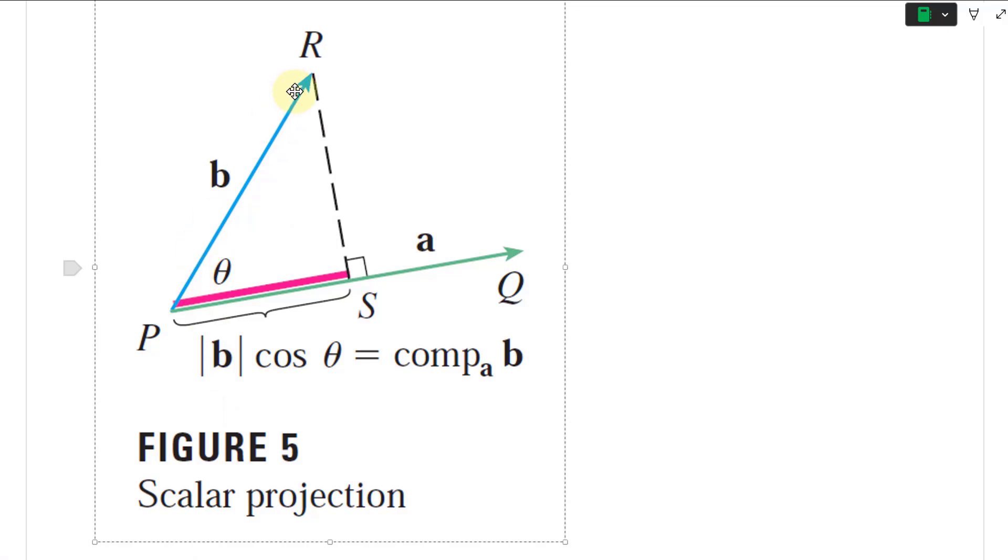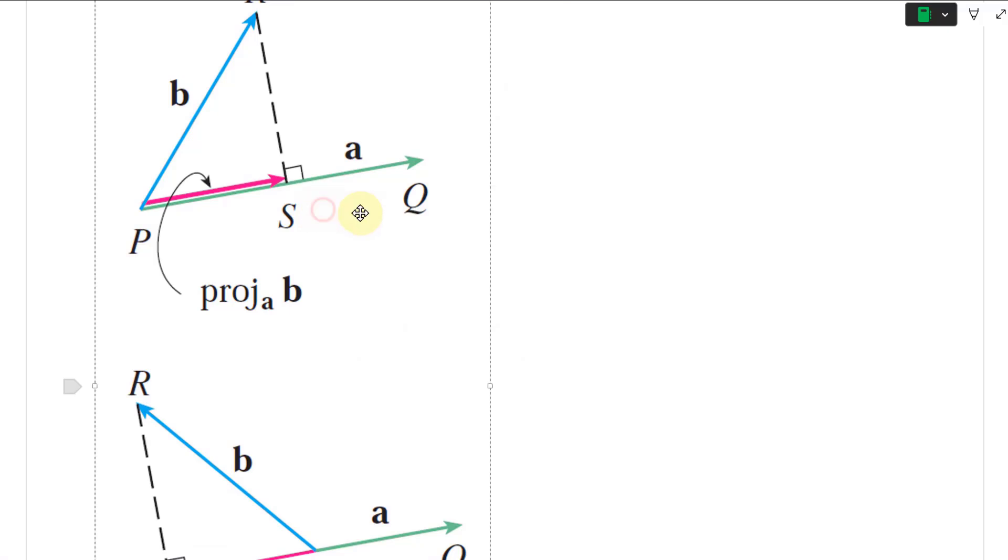There's the scalar projection. You have B onto A and you get cosine times the length of B. That's this component of B onto A, that's how you would term it.